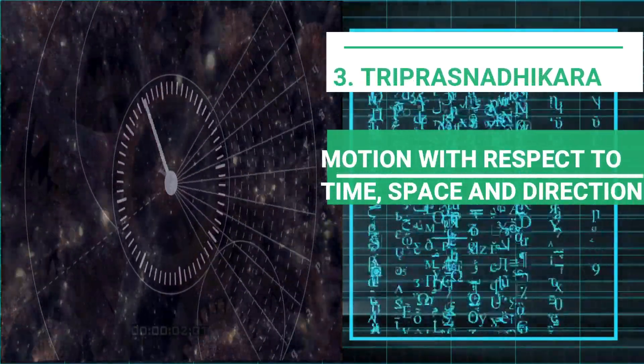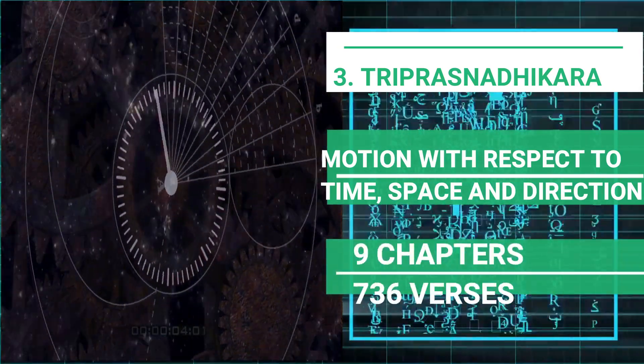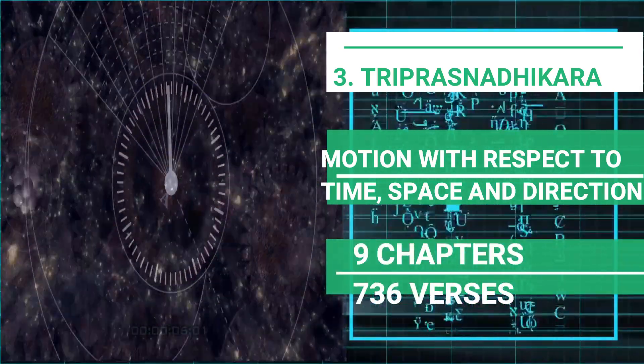Triprasnadhikara is about motion with respect to space, time and direction and has 9 chapters with 736 verses or slokas.